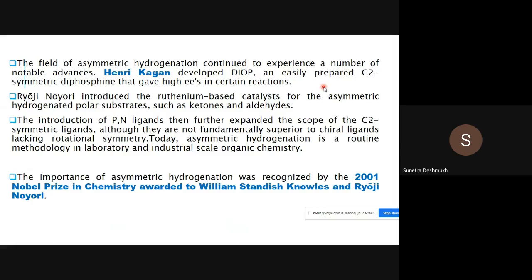Henri Kagan developed DIOP, an easily prepared C2-symmetric diphosphine ligand that gives high enantiomeric excess in certain reactions. Next, Ryoji Noyori introduced ruthenium-based catalysts for the asymmetric hydrogenation of polar substrates such as ketones and aldehydes. The importance of asymmetric hydrogenation was recognized by the 2001 Nobel Prize in Chemistry, awarded to William Knowles and Ryoji Noyori.